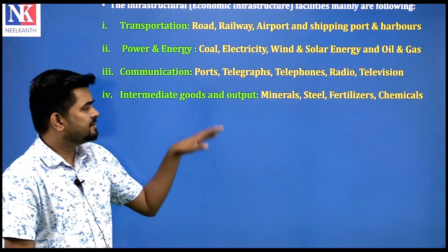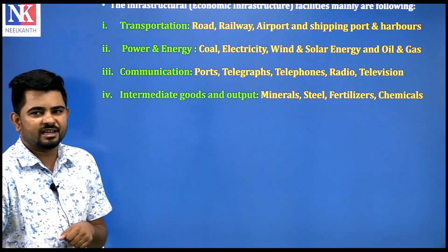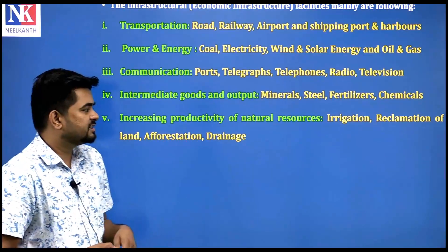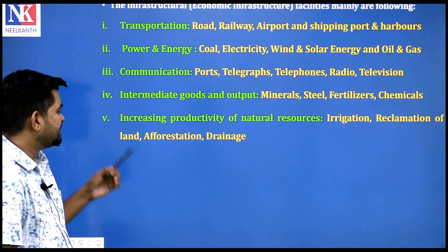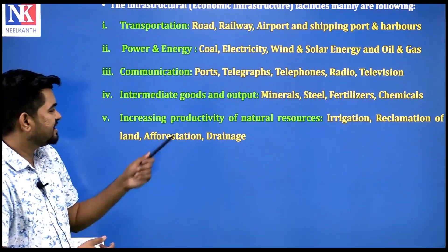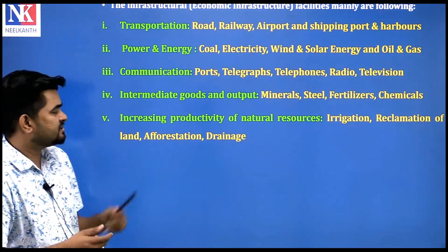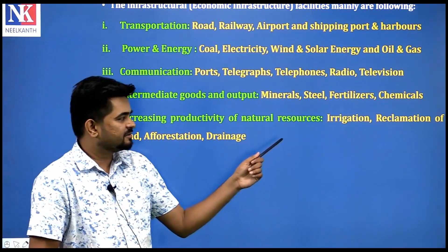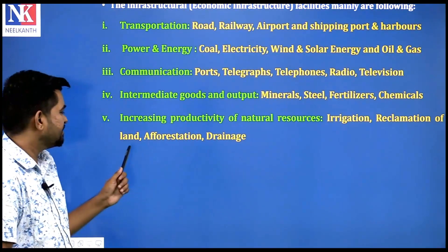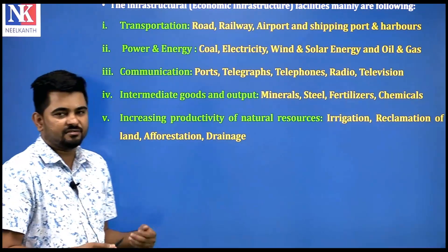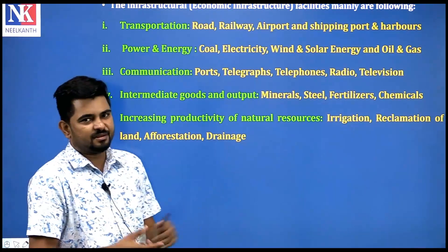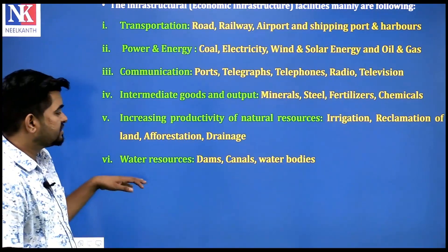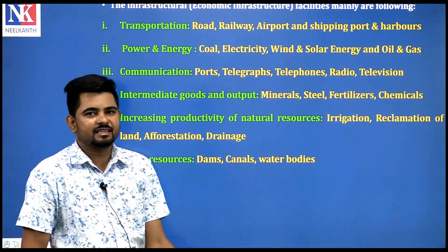Intermediate goods and output include minerals, steel, fertilizers, and chemicals. Increasing the productivity of natural resources involves irrigation, reclamation of land, afforestation and drainage. Water resources such as dams, canals, and water bodies also play a big role in infrastructure development.